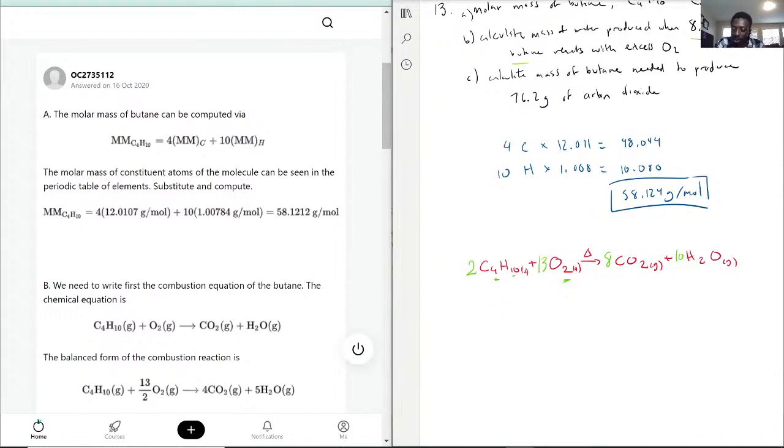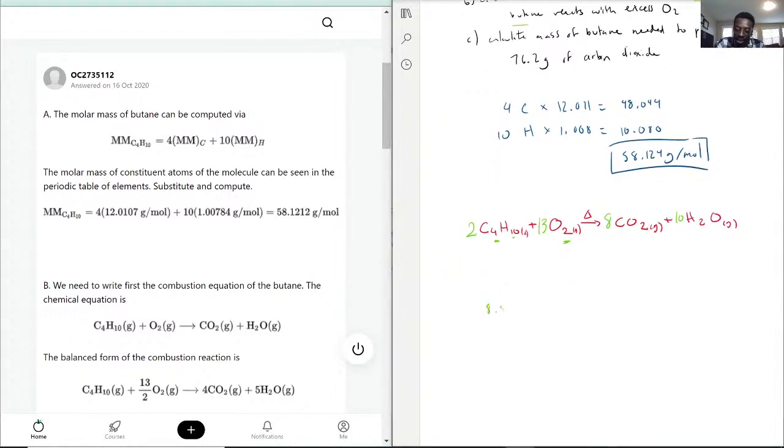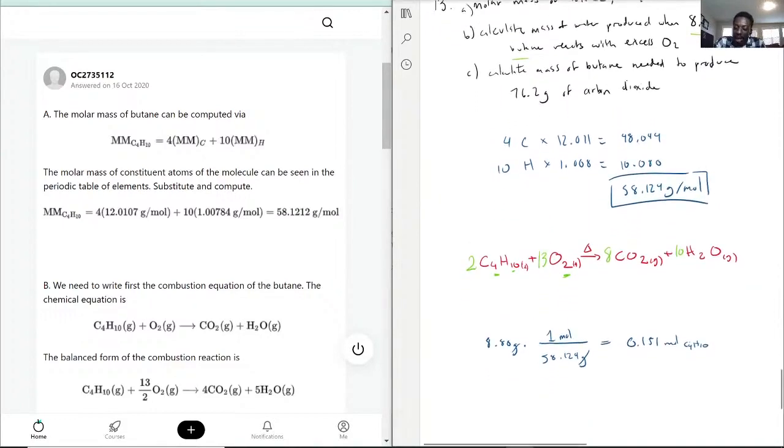Now to find out how much when 8.80 grams of butane reacts with excess O2, we convert that grams into moles using our molar mass. So we have 8.80 grams times one mole over 58.124 grams. These two cancel out so how much moles do we have? 8.8 divided by 58.124, we have 0.151 moles of C4H10.